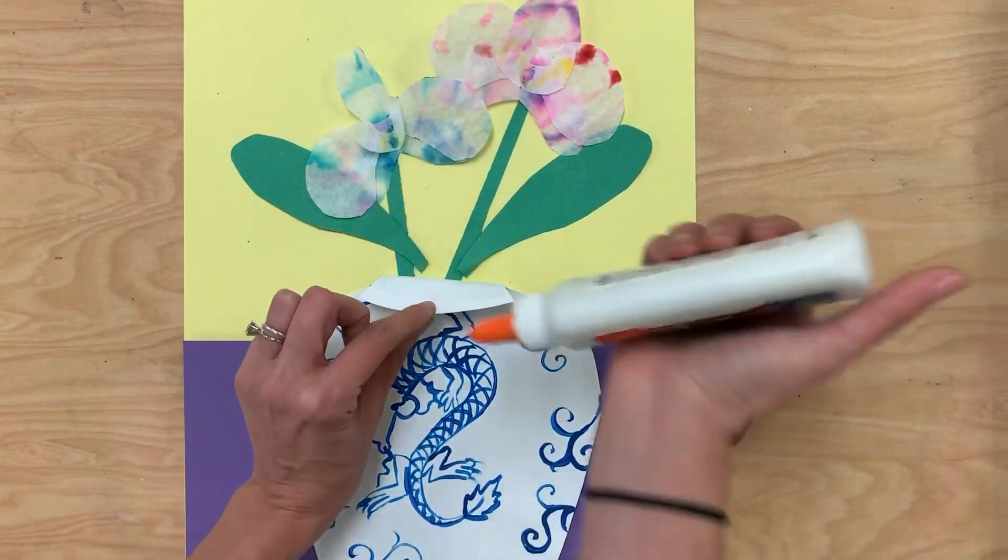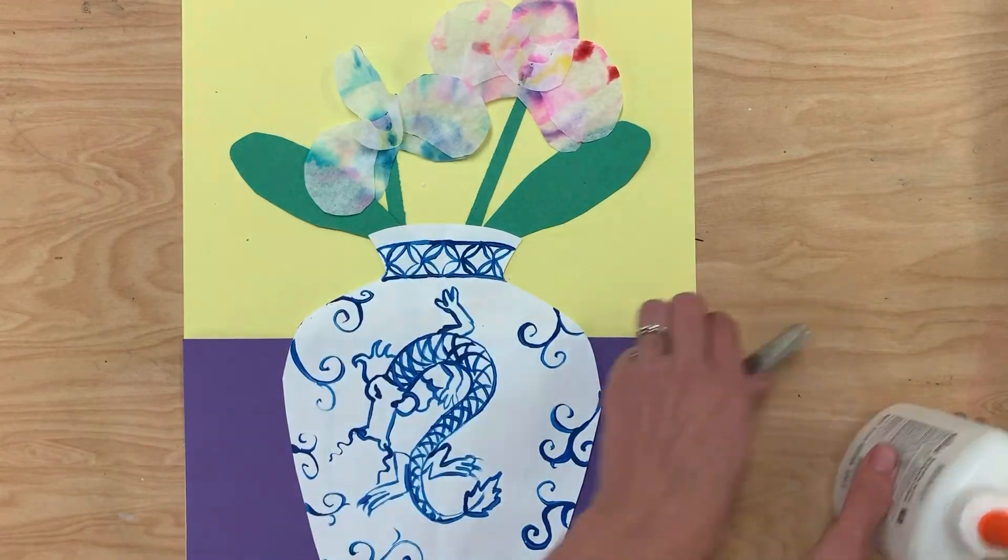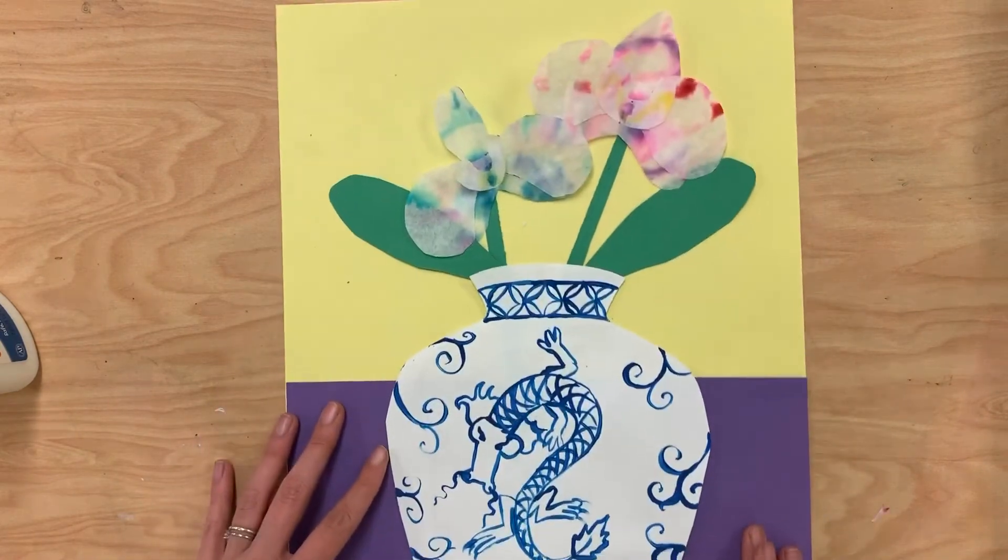And then my last step, since I didn't glue down the top of this yet, just put a few dots of glue and glue that down. And then we're left with this beautiful traditional looking Chinese Ming vase.